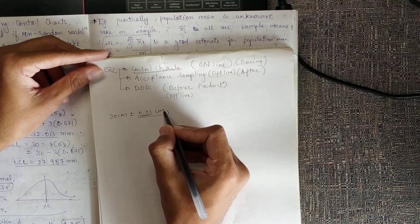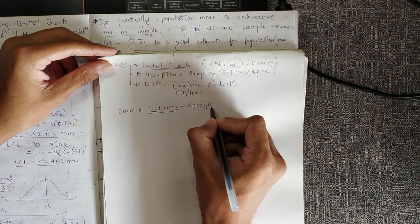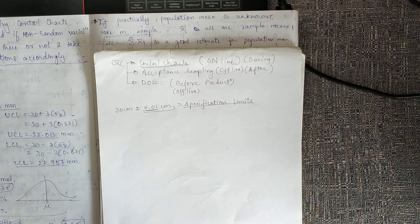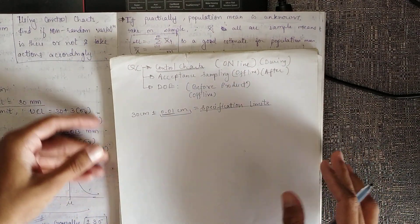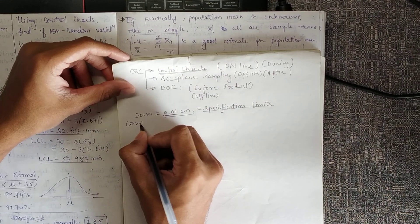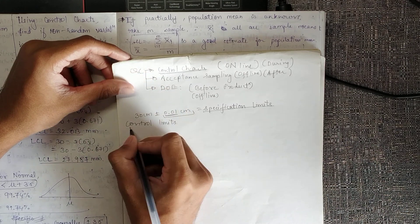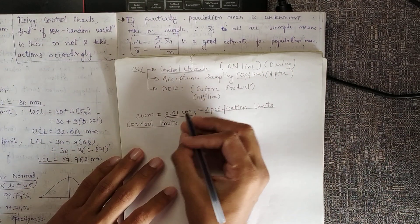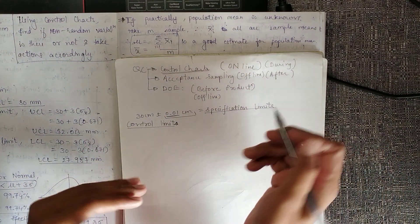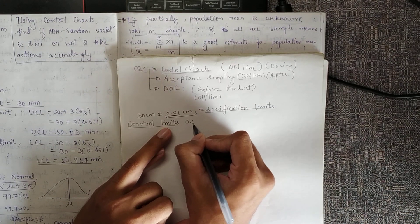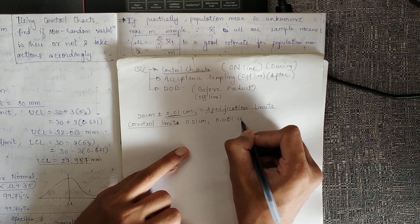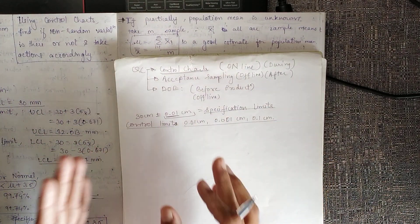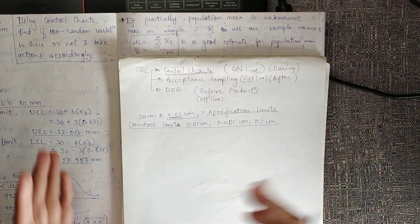These are specification limits — set by the customer or designer of the product. Second are control limits, which are completely based on how our process is able to manufacture. Control limits have nothing to do with what the customer wants; they indicate how good our machines are to produce — whether they can produce to a limit of 0.001 cm, 0.01 cm, or 0.1 cm.